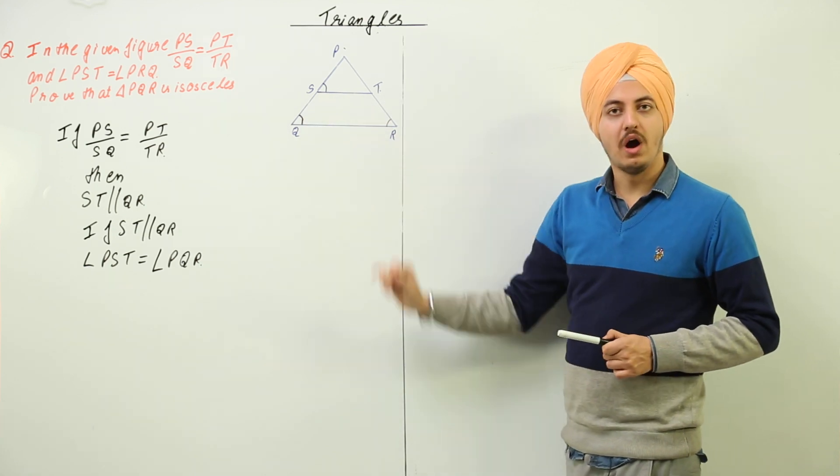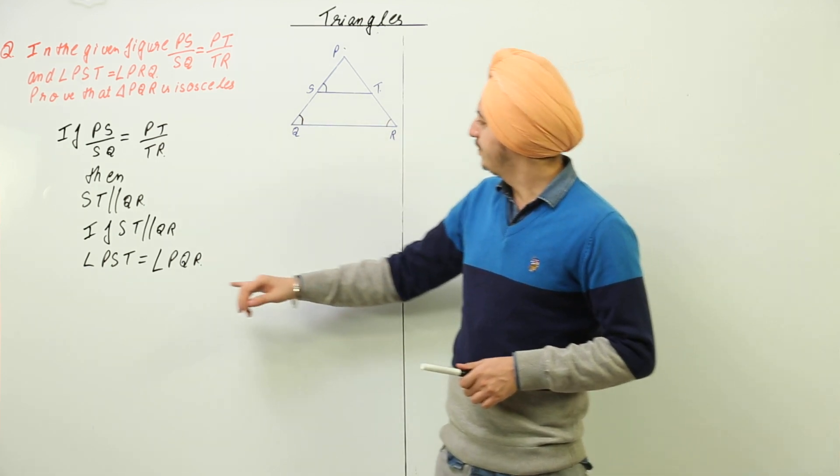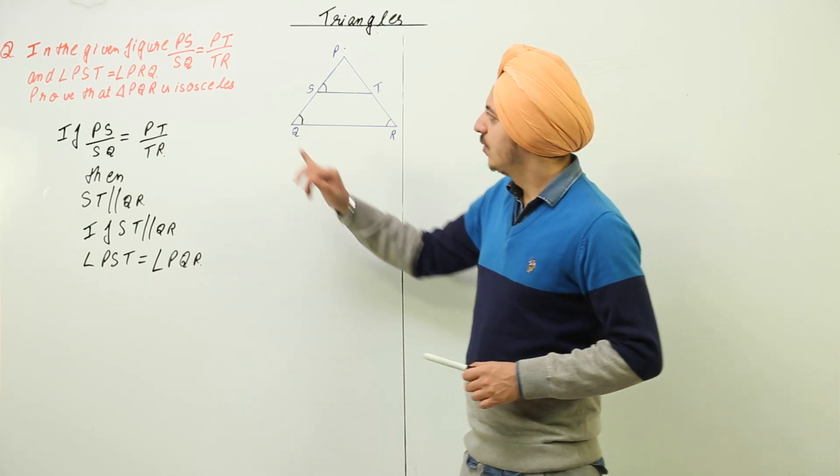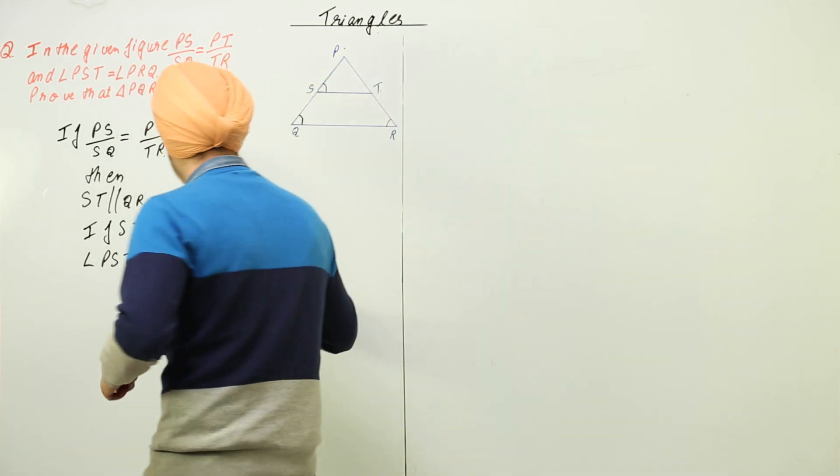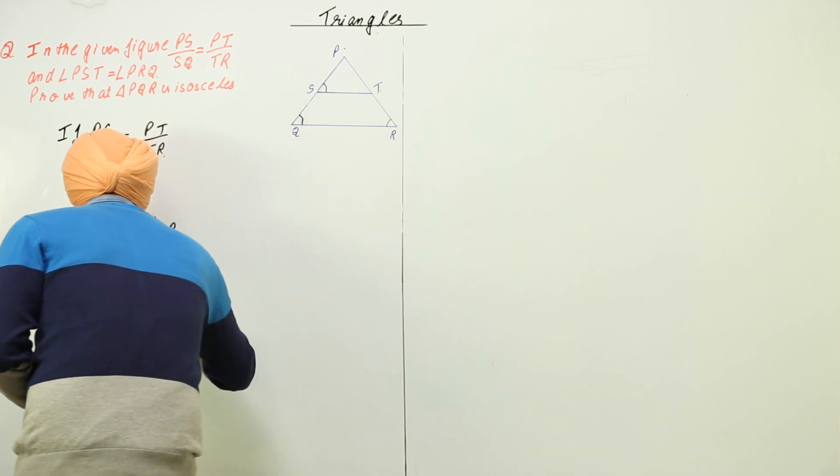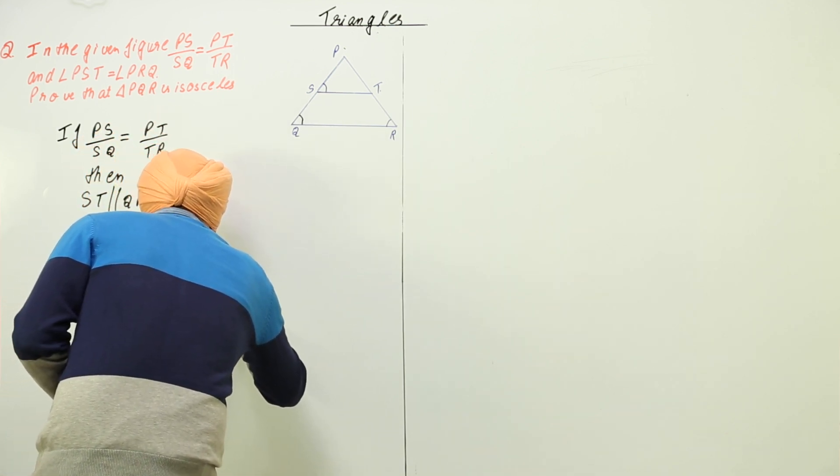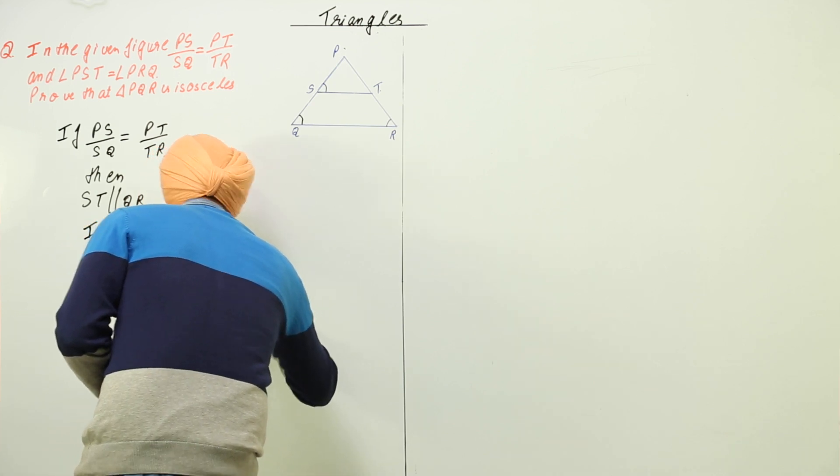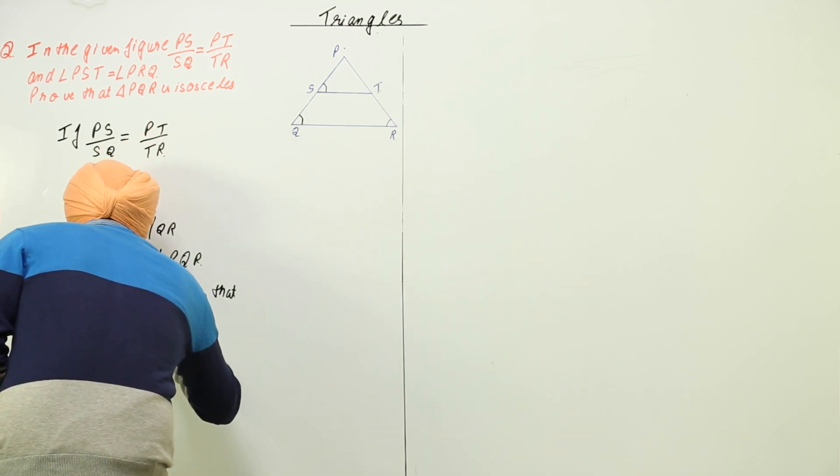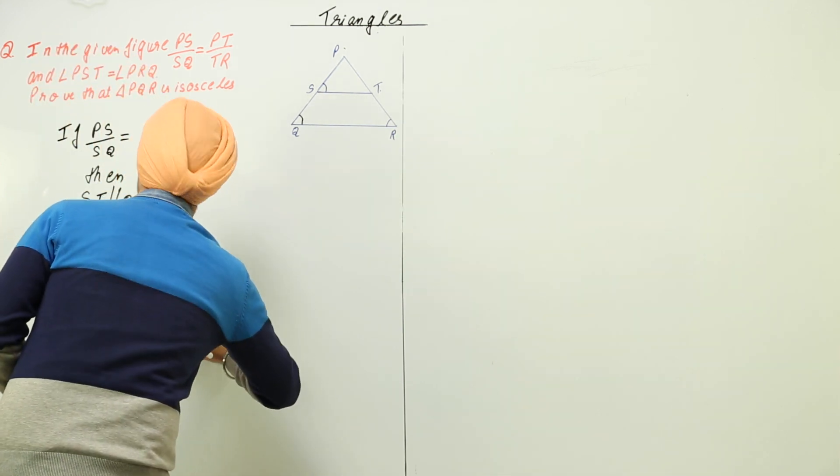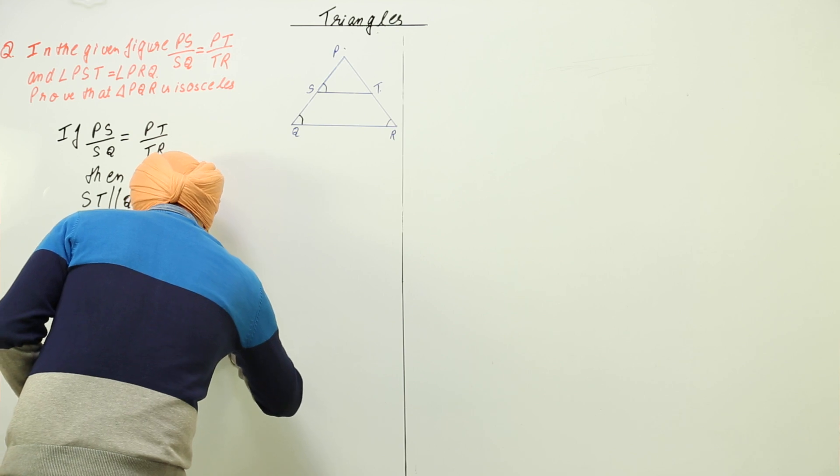Because ST is parallel to QR. So now if angle PST is equal to angle PQR, and we are also given that angle PST is equal to angle PRQ.